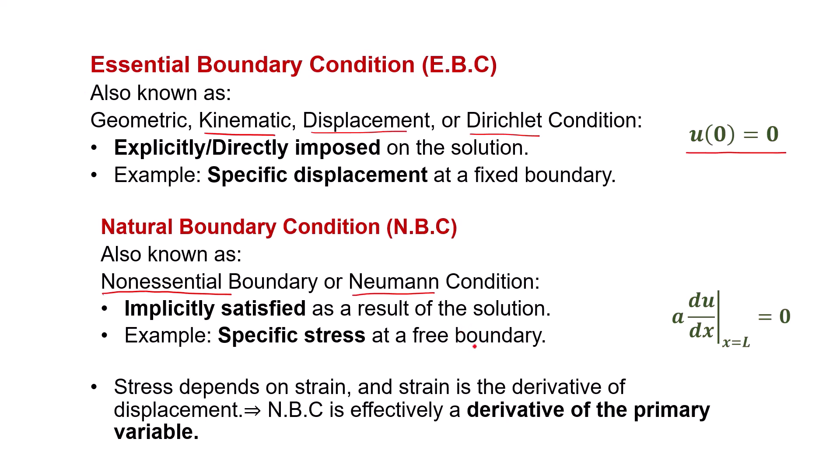So, why do we call it implicitly satisfied? Because stress depends on strain. And strain is derivative of displacement, or the primary variable. So, in this example, the natural boundary condition involves a derivative of the main unknown variable, which is u.